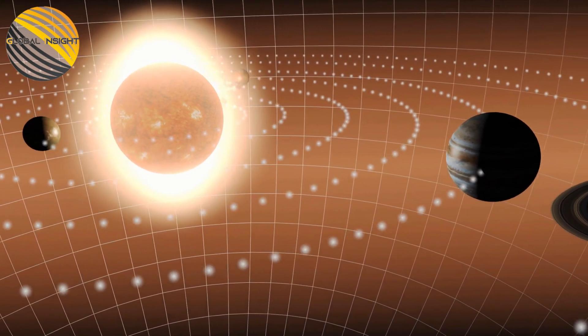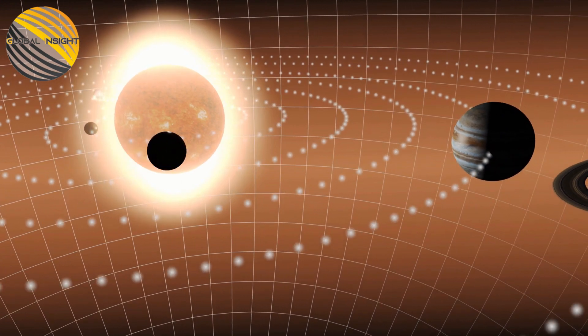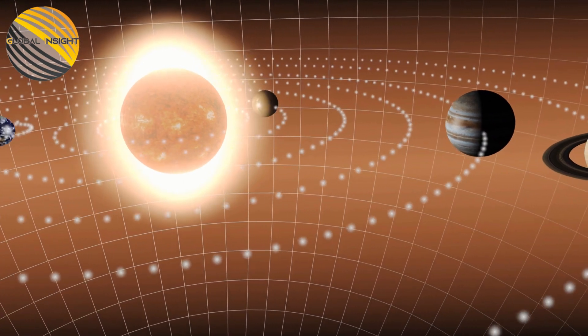At the moment, Jupiter, Saturn, Venus, Mars, and Mercury are all visible to the naked eye simultaneously.